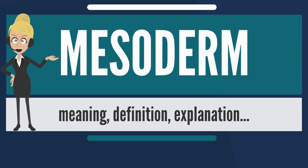The lateral plate mesoderm splits into parietal (somatic) and visceral (splanchnic) layers. The formation of these layers starts with the appearance of intercellular cavities. The somatic layer forms a continuous layer with mesoderm that covers the amnion, while the splanchnic layer forms a continuous layer covering the yolk sac. The two layers cover the intraembryonic cavity. The parietal layer together with overlying ectoderm forms the lateral body wall folds. The visceral layer forms the walls of the gut tube. Mesoderm cells in the parietal layer form the mesothelial membranes, or serous membranes, which line the peritoneal, pleural, and pericardial cavities.